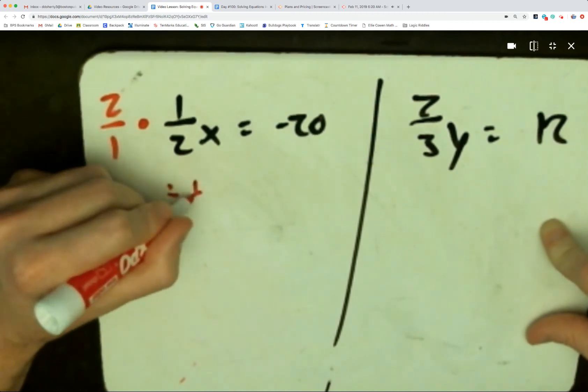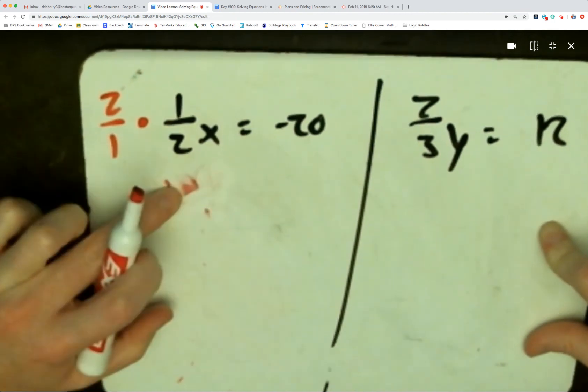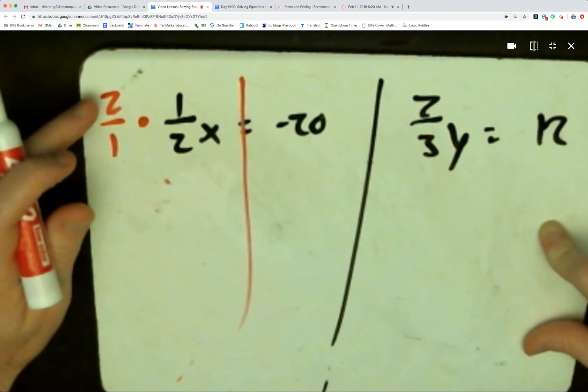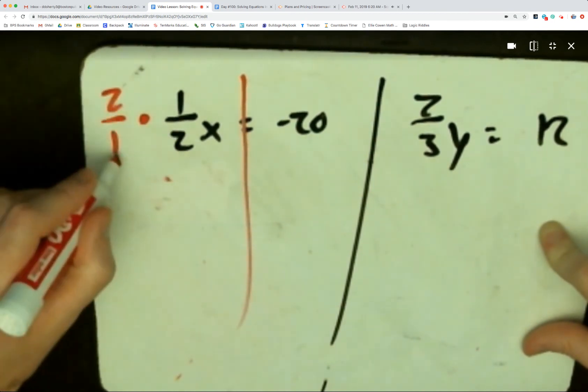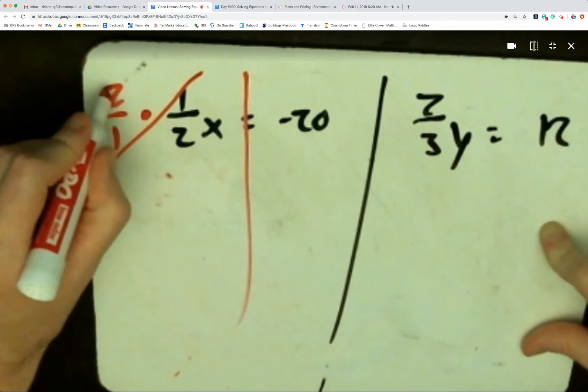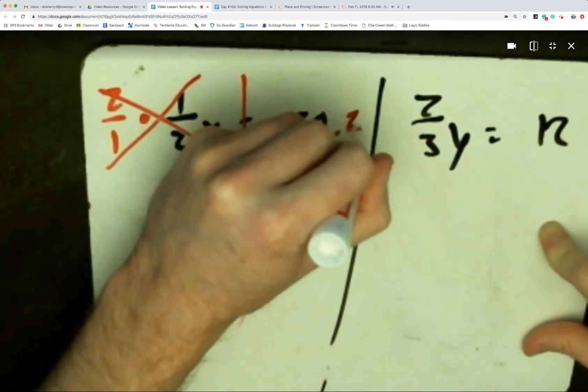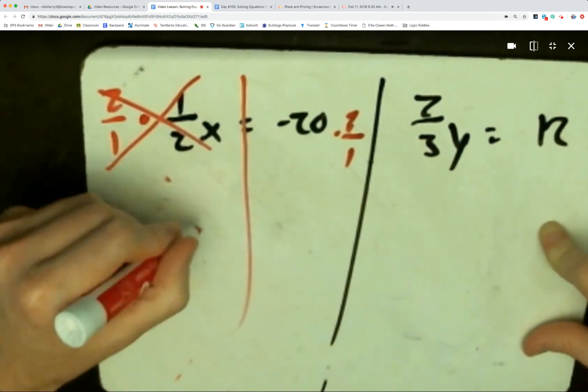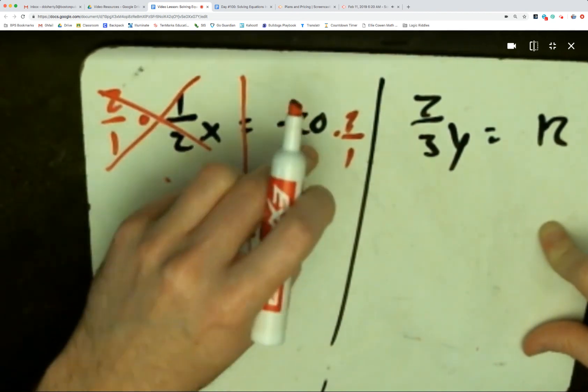Now we can start to see why dividing by a fraction means the same thing as multiplying by the reciprocal. When I do two over one times one over two, it perfectly cancels itself out. So I do the same thing on the other side, times by two over one. At the end of the day, x equals negative 40 because that's what I get with negative 20 times 2 over 1.